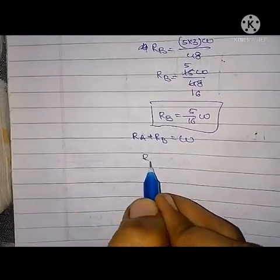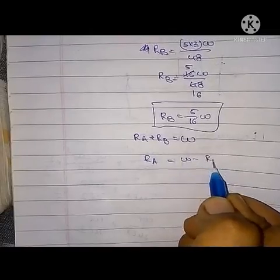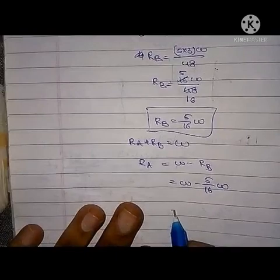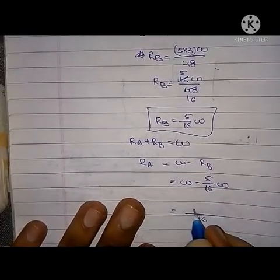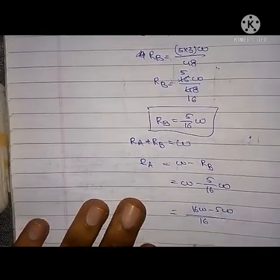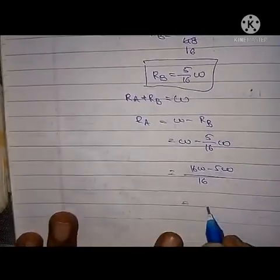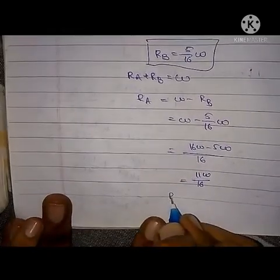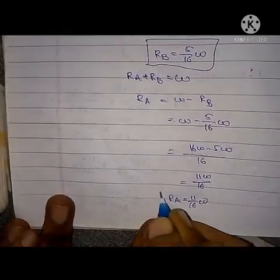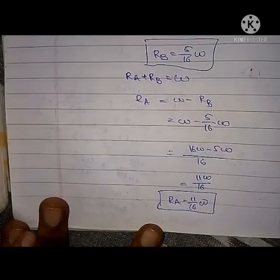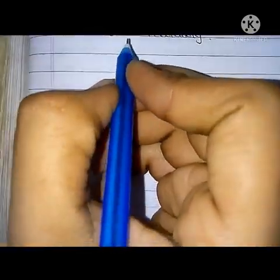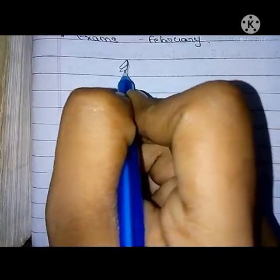Now finding RA: RA equals total load W minus RB, that is W minus 5W/16. This gives 16W minus 5W over 16, which equals 11W/16. So RA = 11W/16 and RB = 5W/16. Next, I will calculate the bending moment and show the actual diagram.